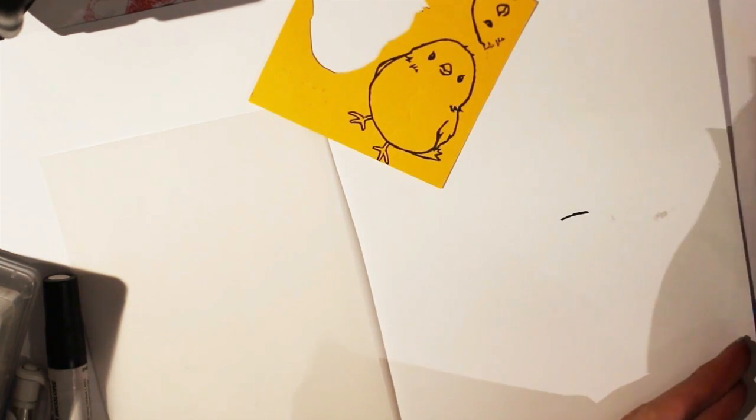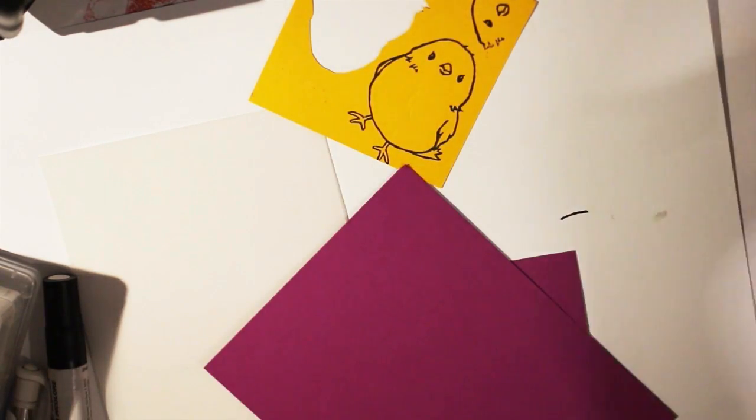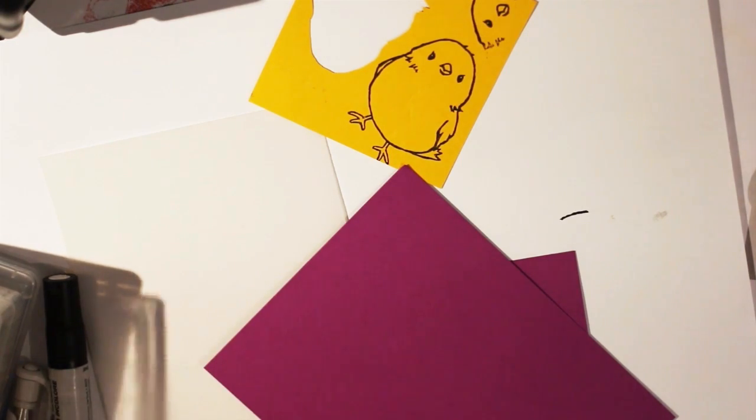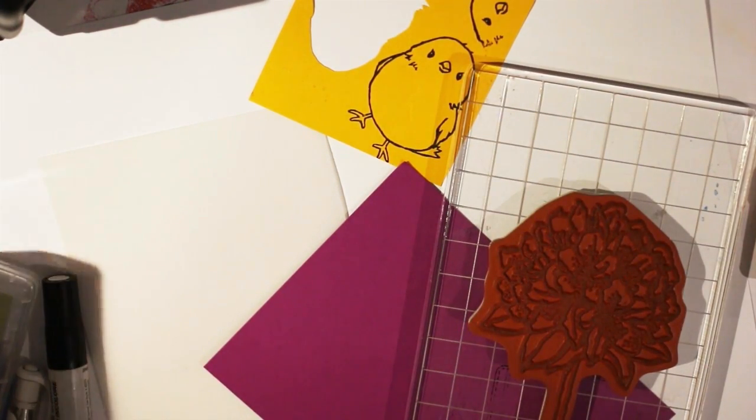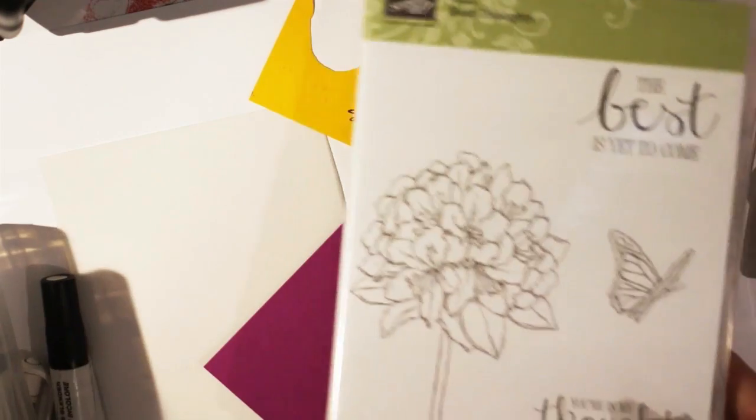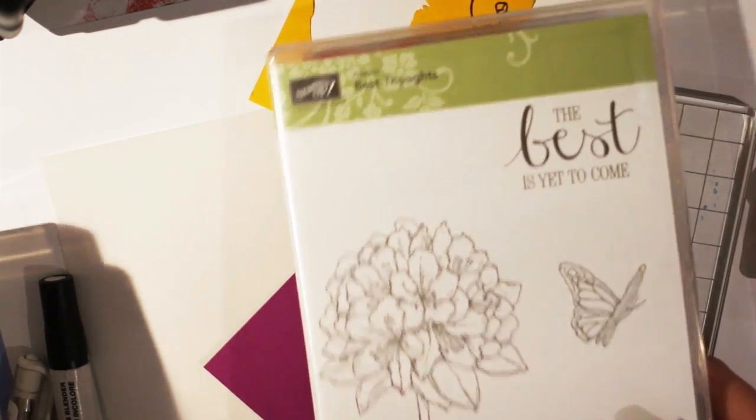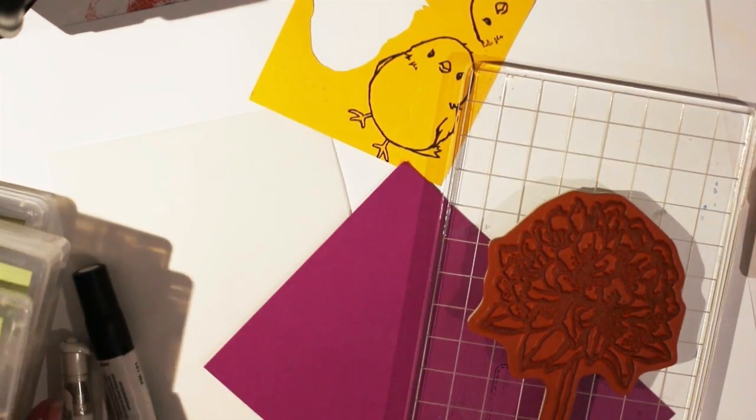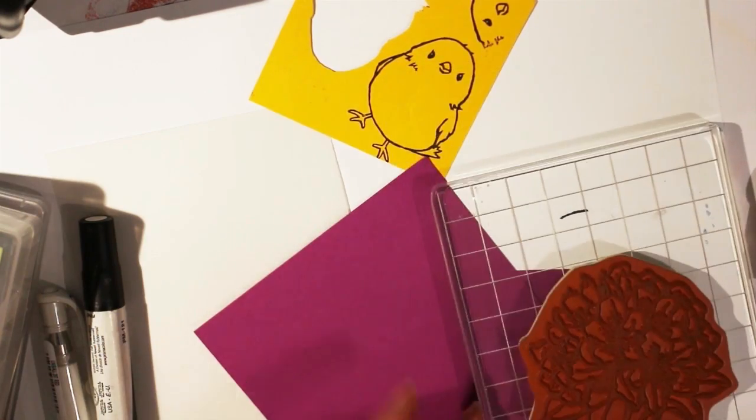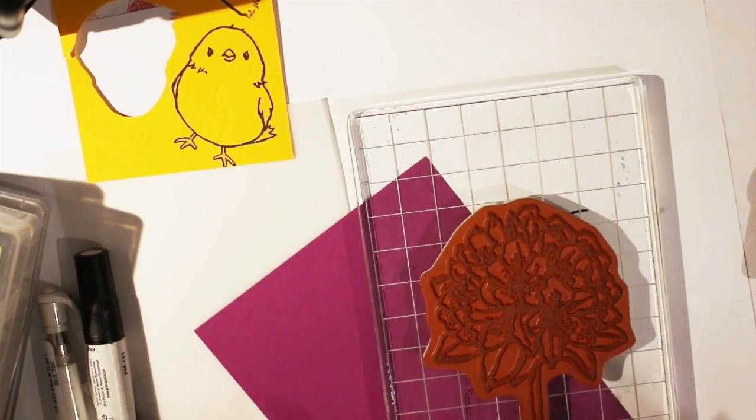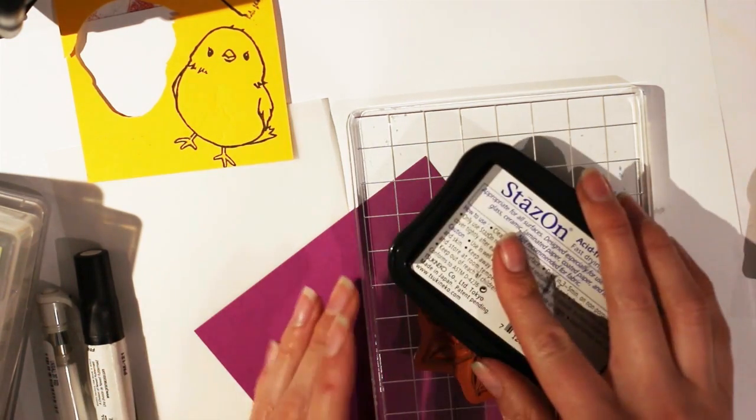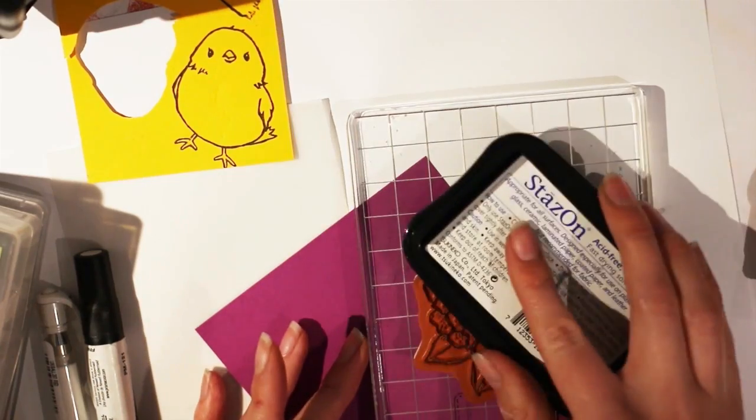The next is the flower. And the flower is from the stamp set that you I think you still can get. This one is called Best Thoughts and it's also Stamping Up. Everything that's still available to buy I will link in the descriptions, and if I forget to mention something likelihood is I will probably remember to add it to the description so don't worry.